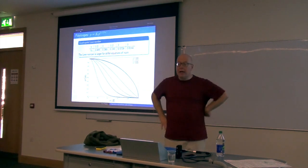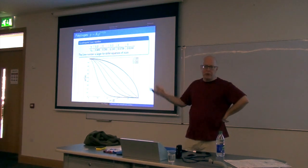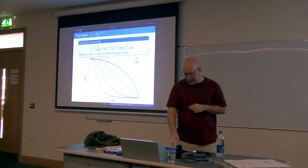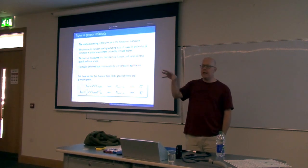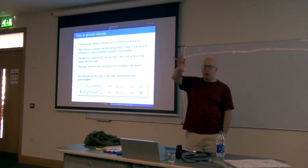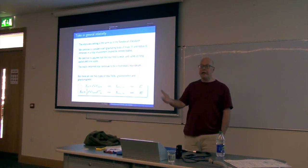That's a Newtonian calculation. I've shown you how to do all of this in Newtonian theory. The key physics input, as always, is the equation of state. Now I'm going to tell you how to do this in general relativity. The details change, but all of the ingredients required for the calculation are exactly the same. The key input is again the equation of state.